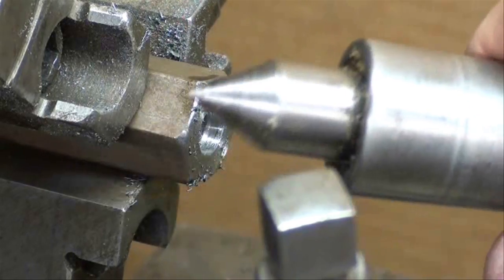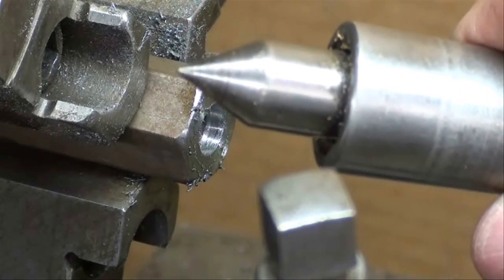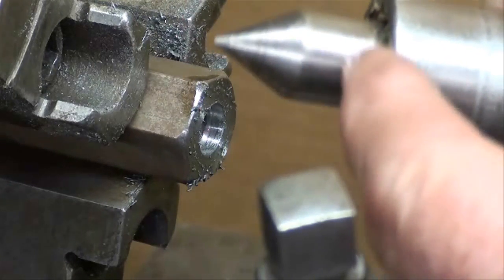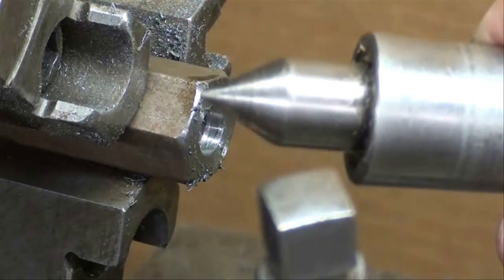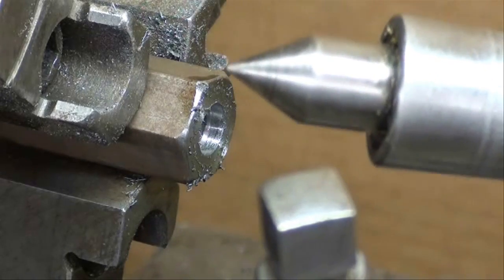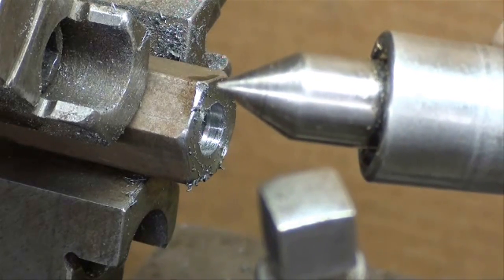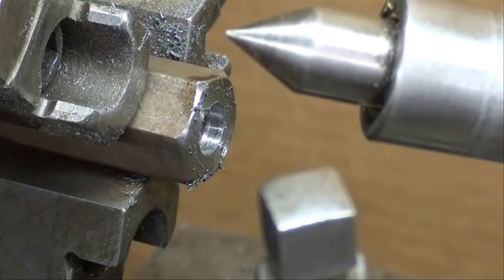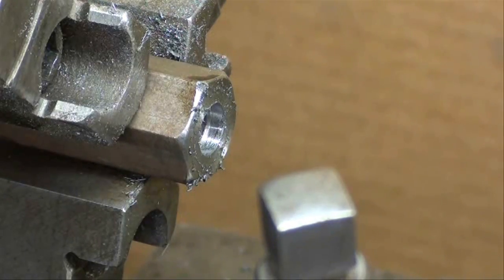I'm going to put my spring-loaded live center in the tailstock. This part is spring-loaded, I like to use that for tapping because when you back your tap off a little bit that will recede and less chance of ruining your thread or breaking the tap.